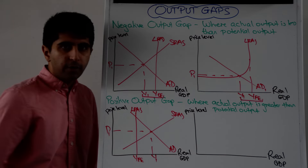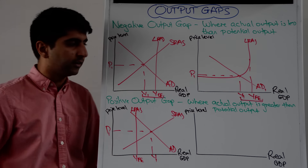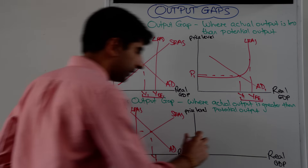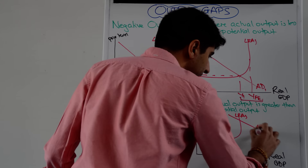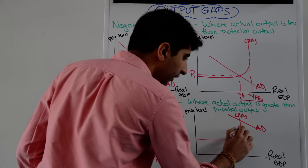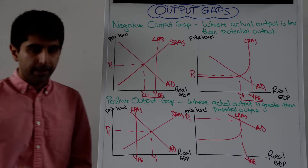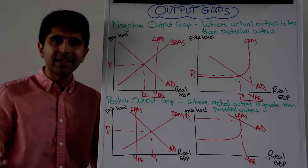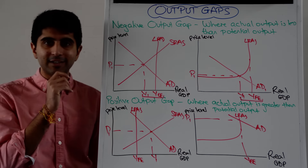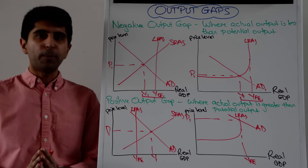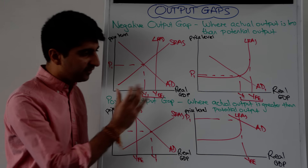It is very difficult — in fact impossible — to show a positive output gap perfectly on a Keynesian diagram according to this definition. But if you want to show it, you would draw a Keynesian LRAS curve and show aggregate demand right at the top of the vertical part of Keynesian LRAS, i.e. right at YFE with a very high price level. This doesn't fit the definition exactly, but it would still be accepted by an examiner. If you had to draw a positive output gap in the exam, draw the classical version where what you're showing clearly fits the definition.